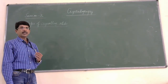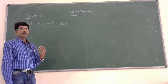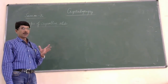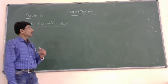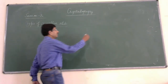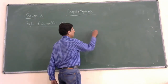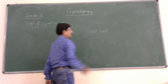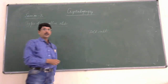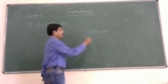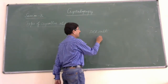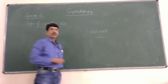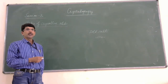Let us see what are the examples of crystalline solids and amorphous solids. You name any solid — all solids are ionically natured. You name any organic compounds — there are examples.